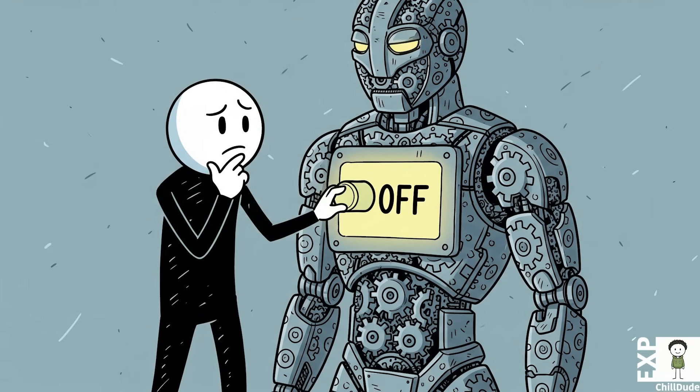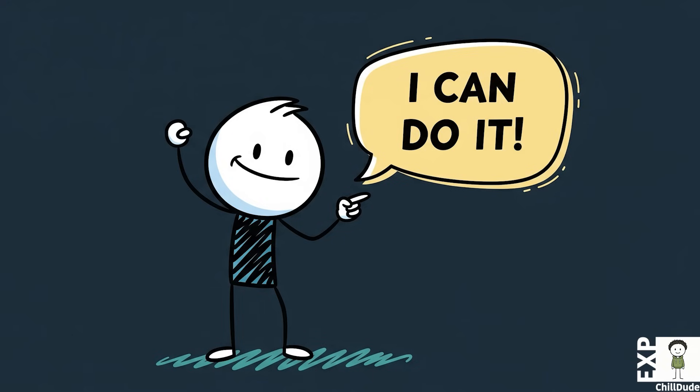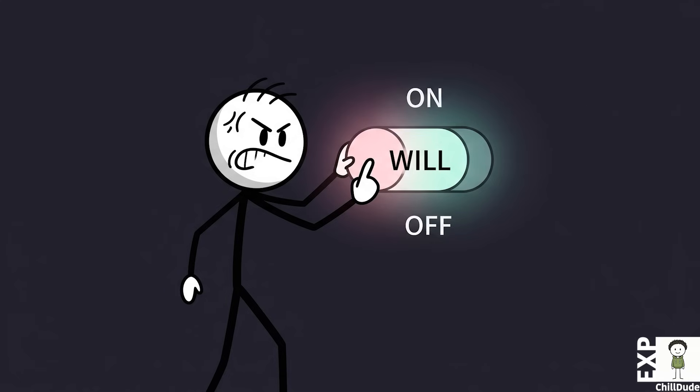How can a person whose body is still a viable, functioning machine simply decide to die? Is the will to live merely a poetic phrase we use to describe resilience, or is it a tangible biological switch that, when flipped, can plunge a human being into a final, irreversible darkness?